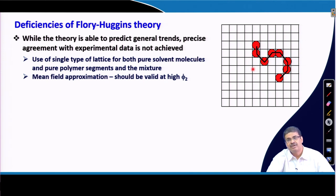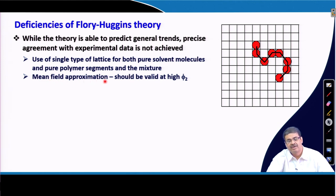That is not true, especially in dilute solutions, because polymer segments are connected to each other. Hence, it is not accurate that the polymer segments already present in the 3D cells are distributed uniformly — this is what we call the mean field approximation. So this is not valid for dilute solutions; it may be valid at high concentrations of polymers in solution.